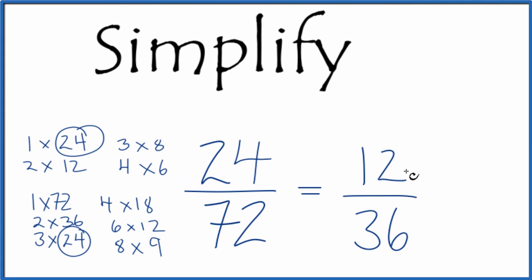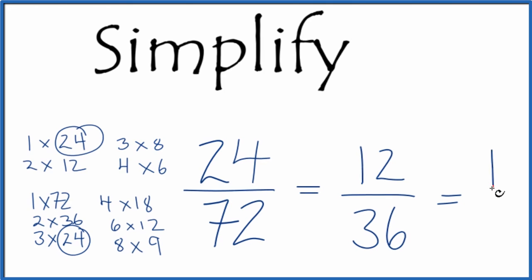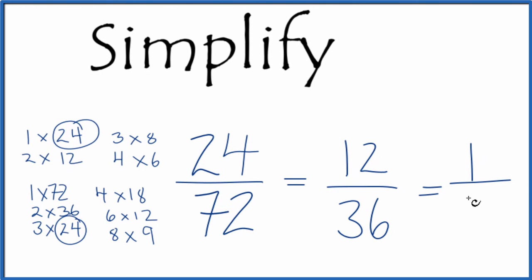And now you might see that 12 goes into 36 three times. So 12 divided by 12 is one. 36 divided by 12 is three. But if you didn't see that, you could divide this by two and 36 by two again, since they're even and you could just add another step right here. Either way, when you simplify 24/72 down to its lowest terms, you get one third. This is Dr. B. Thanks for watching.